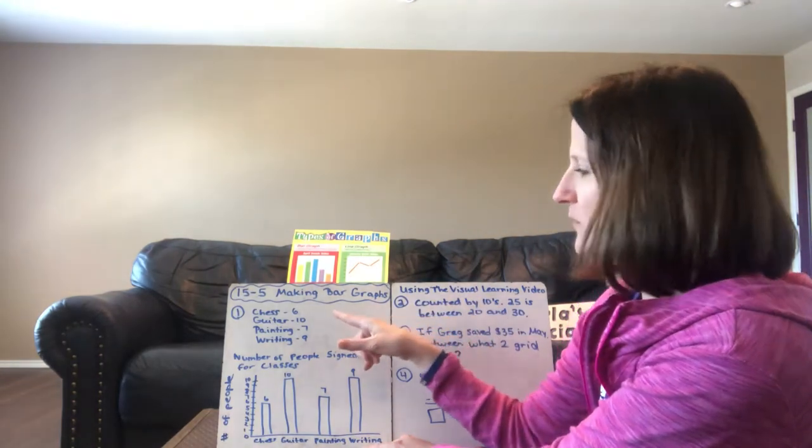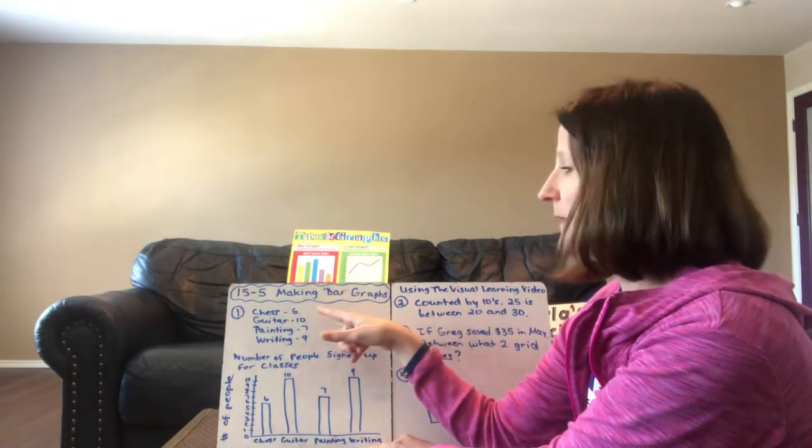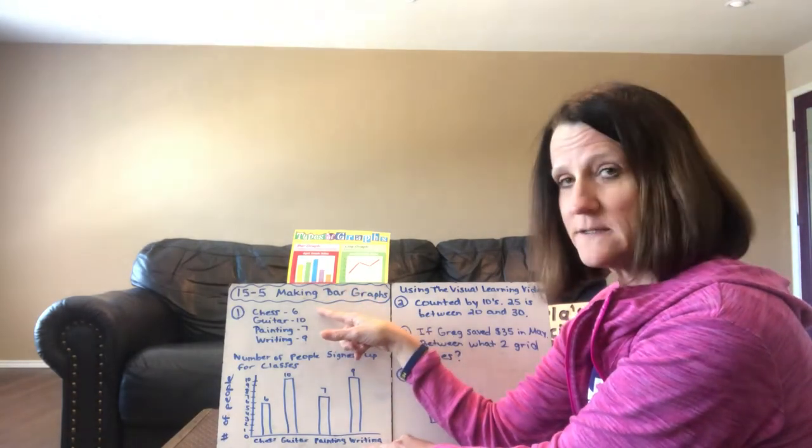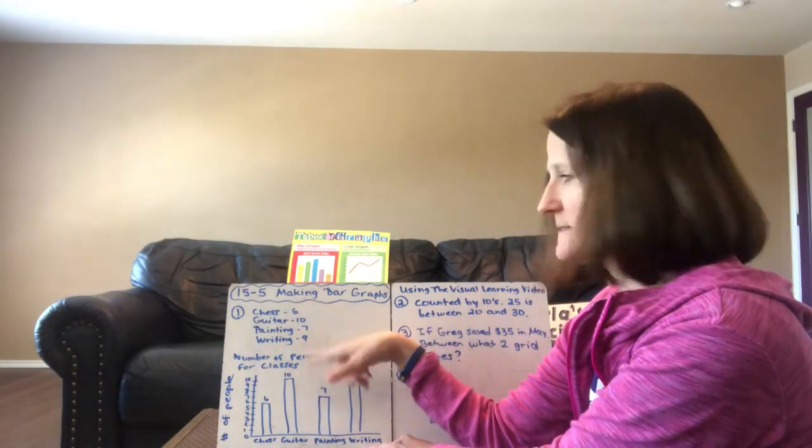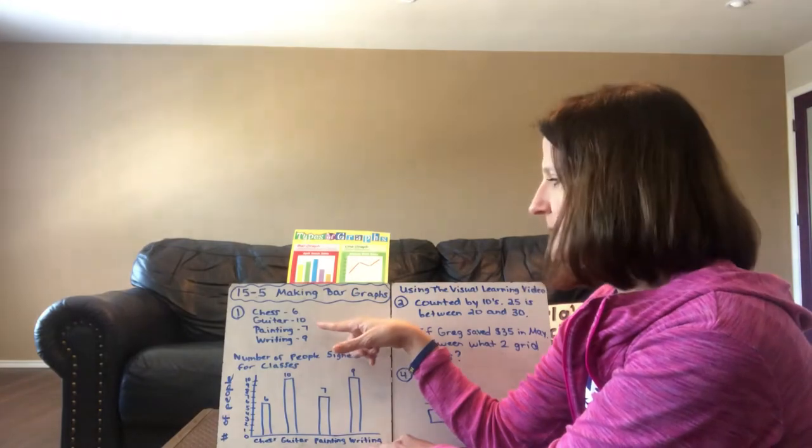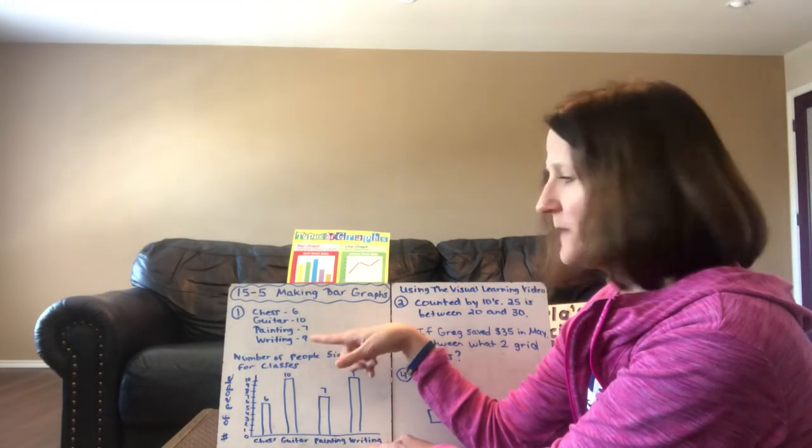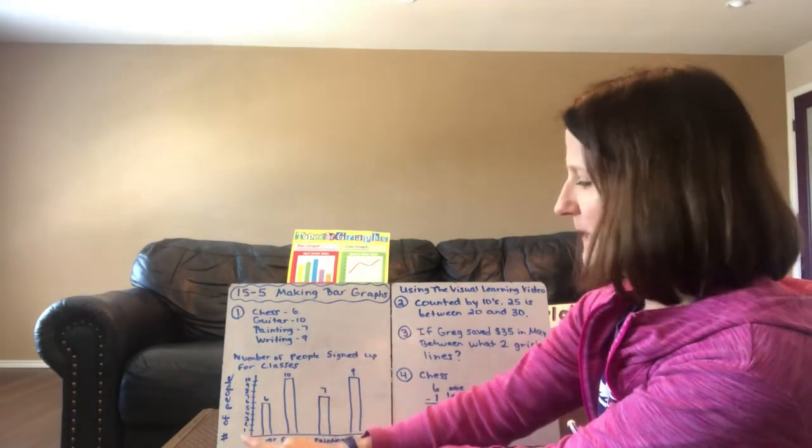On number one, you've got the little table. I didn't draw it all out, but six people picked chess, ten people picked guitar, seven people picked painting, and nine people picked writing for the number of people who signed up for classes.